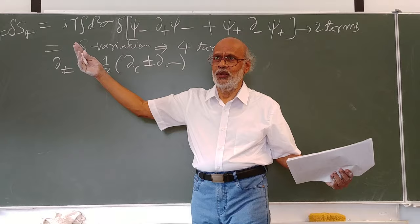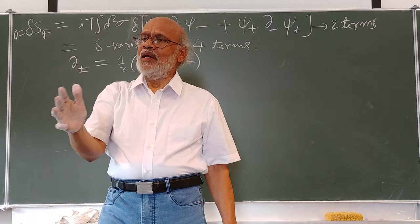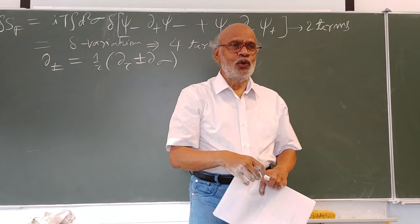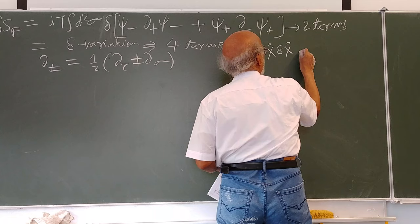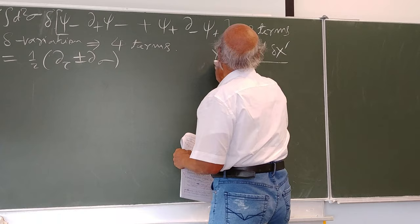There are two different alternative routes you can take: either you convert this into the light front measure and then carry out the integrations, or we follow the steps we have done for the bosonic string theory. In the bosonic string theory, you may recollect that we had terms of the type delta x-dot and x-prime delta x-prime.